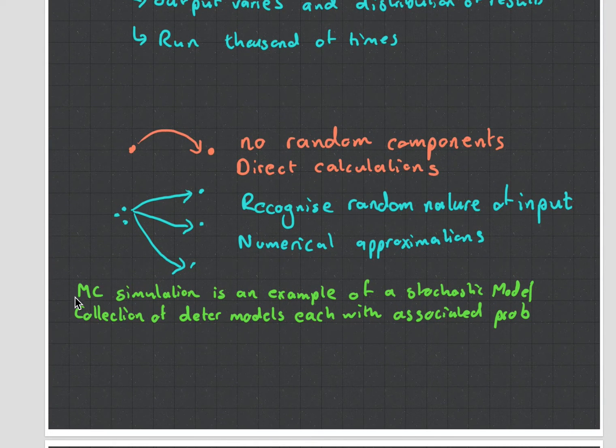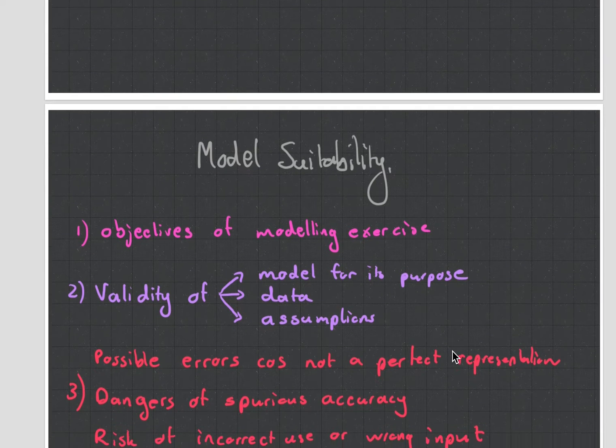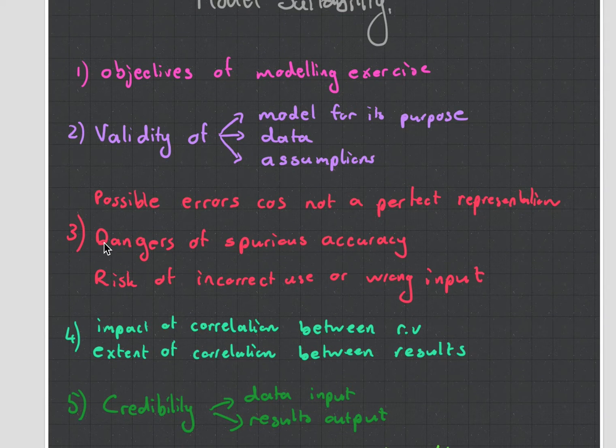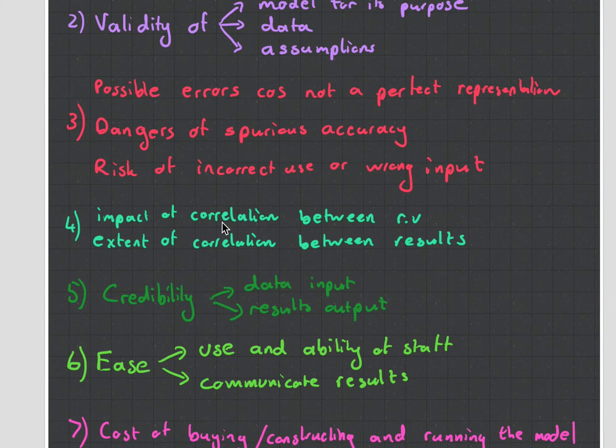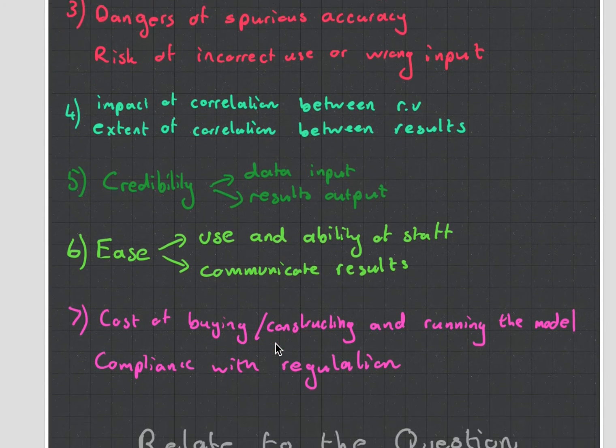There's this whole thing of Monte Carlo simulation. This was a big question they can ask - when is it suitable to use a model. You need to think of what's the objectives of the exercise, how do I validate that the model's correct, the data's right, the assumptions aren't wrong, and what can go wrong, what do I need to be aware of. There's correlation, credibility, ease of use, and cost of buying the model.